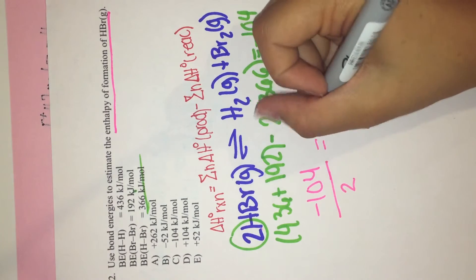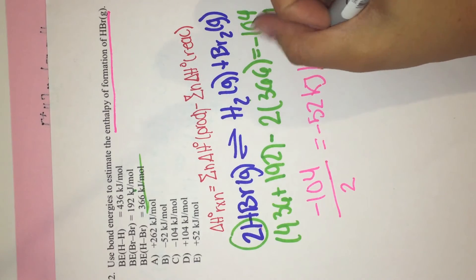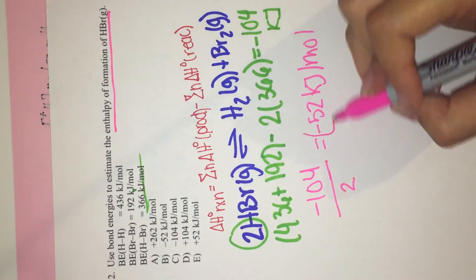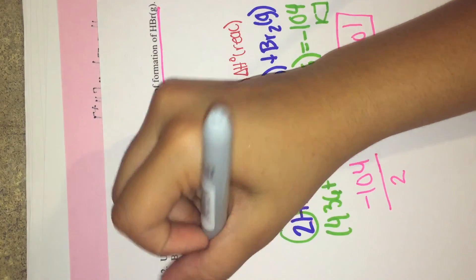which is equal to negative 52 kilojoules. So this is the answer, which is B.